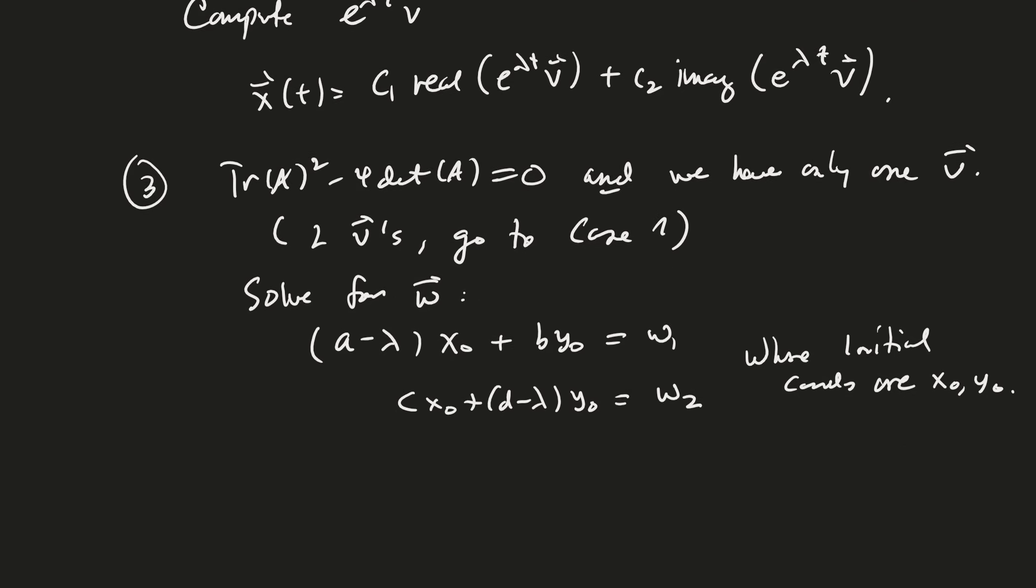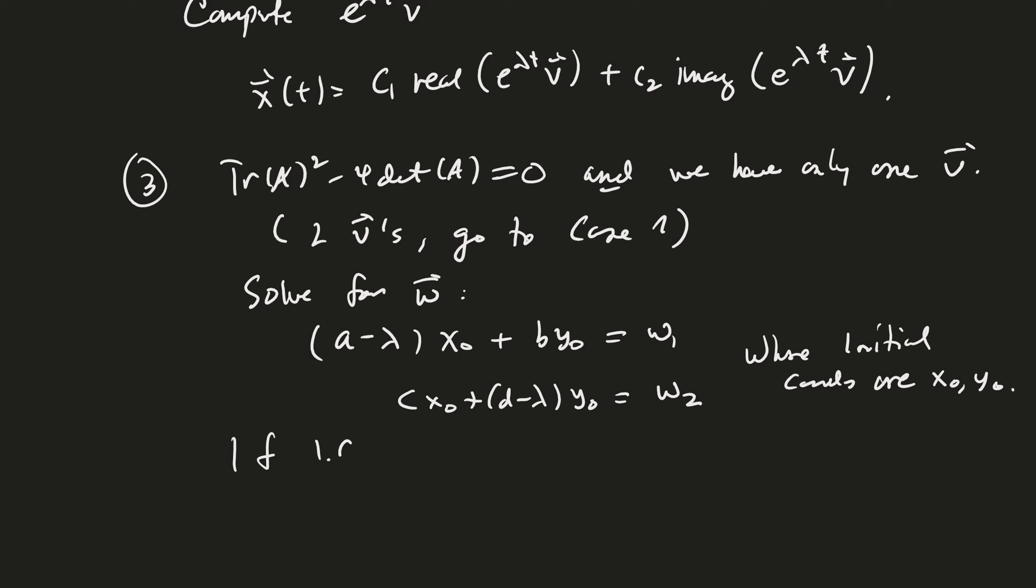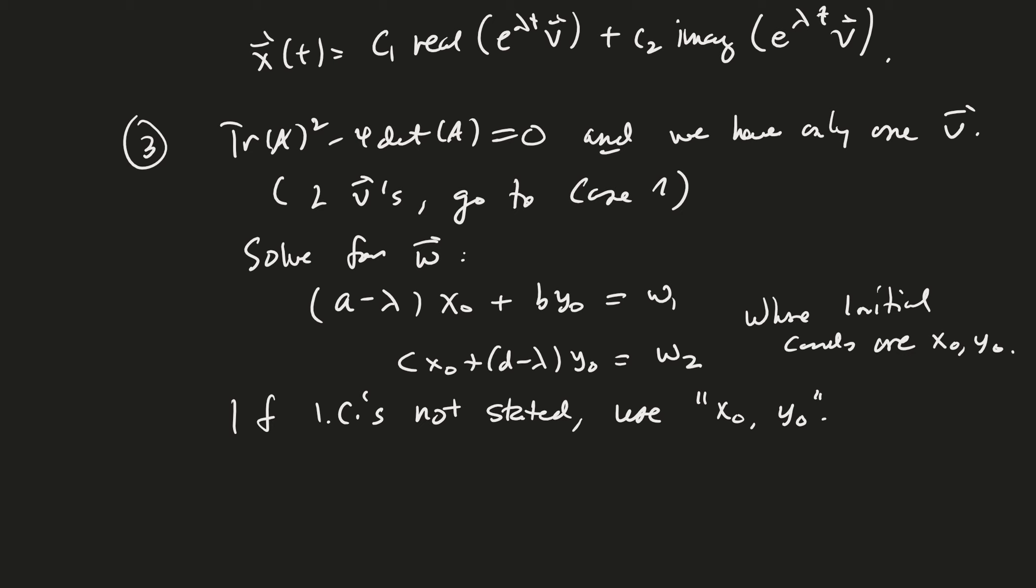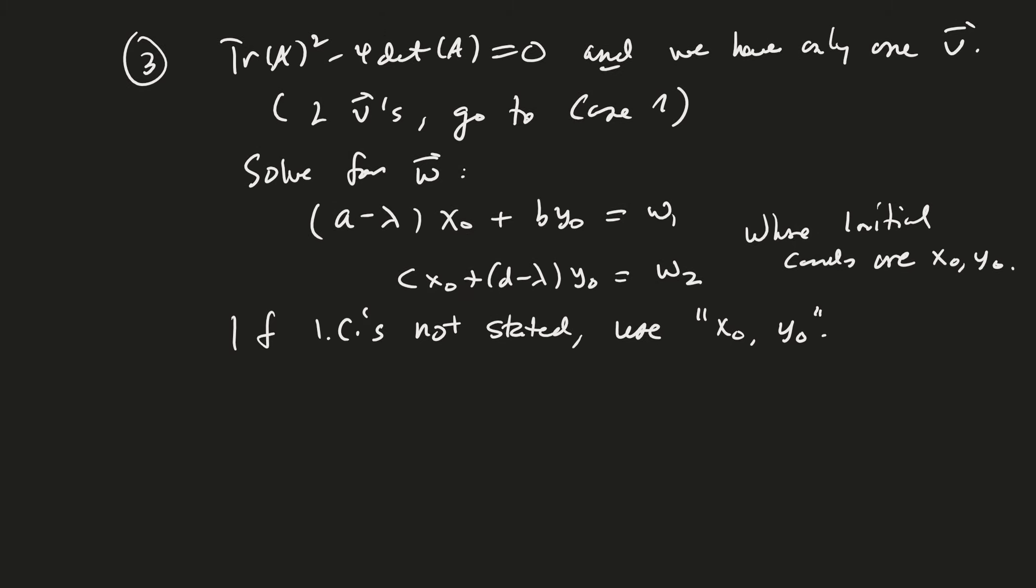By the way, if the initial conditions are not given, just use x0 and y0 as your two initial conditions. Okay. Good. And then, in that case, once we've found w, and once we have our initial conditions, we can write x of t equals e to the lambda t times x0 plus t times w. Good.